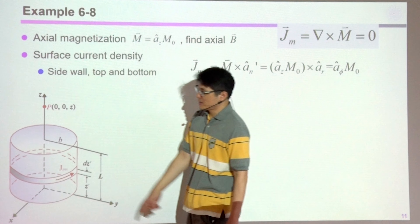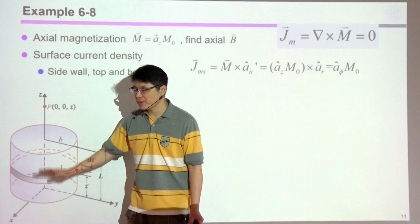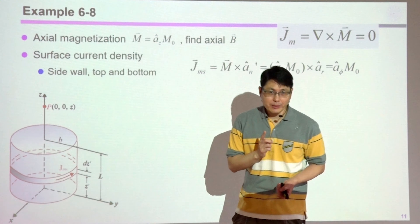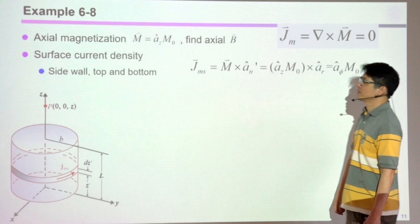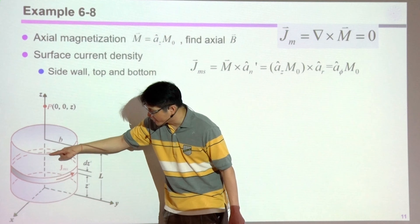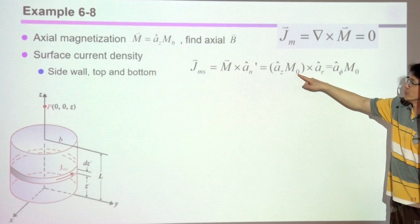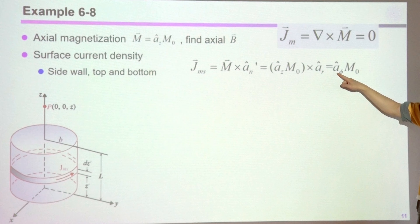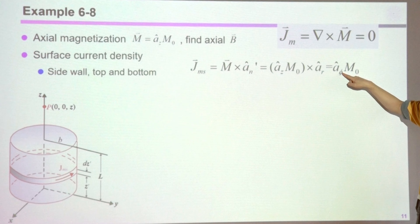You only have to take care of the circumferential surface, pointing outwards everywhere. You perform n̂ × M. The surface normal everywhere on the cylindrical surface is pointing in the radial direction. So you have M₀ (a constant) in the z direction making a cross product with â_r. Z cross r is φ̂. The resulting surface magnetization current density is pointing everywhere in the φ direction with magnitude M₀. That means you can view the cylinder as lots and lots of current-conducting loops with differential height dz prime.